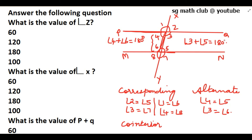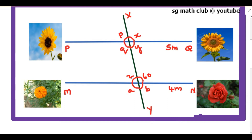Now let's look at the figure and find the answers. What is the value of angle z? Angle z and the given 60-degree angle form a linear pair, so by the linear pair axiom: 180 minus 60 equals 120 degrees. So angle z equals 120 degrees. The next question is: what is the value of angle x? Angle x and this angle form a pair of corresponding angles, so the value of angle x is 60 degrees.